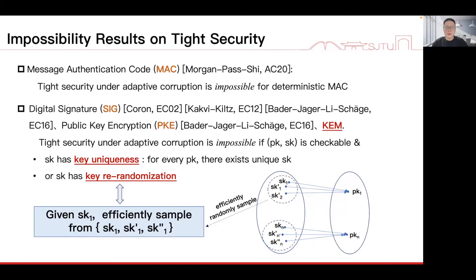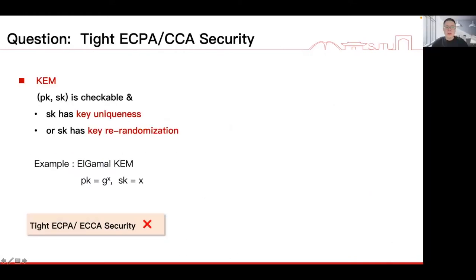The first condition requires SK has key uniqueness, namely for every PK, there exists at most one SK corresponding to it. The second condition requires SK has key re-randomization, namely given SK1, one can efficiently sample a uniform SK from all secret keys corresponding to PK1. Existing impossibility results rule out some KEMs on their tight security under adaptive corruptions, thus also their tight enhanced security. For example, the ElGamal KEM satisfies the SK key uniqueness — each PK has a unique SK — thus it is impossible for ElGamal KEM to have a tight enhanced security.